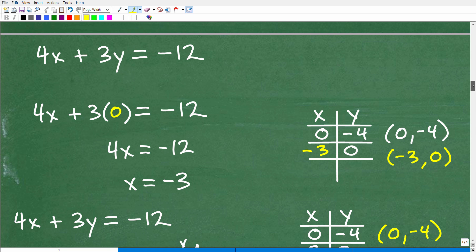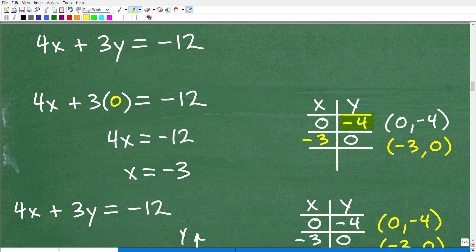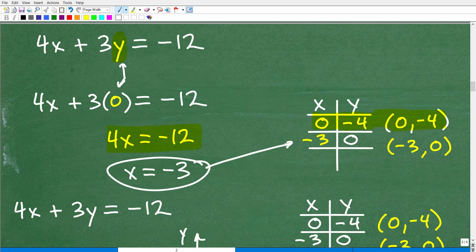So let's go ahead and figure out what X is equal to when Y is 0. We already figured out that Y is negative 4 when X is 0. So what is X when Y is 0? We're going to replace this Y with 0. So this leaves us with 4X plus 3 times 0 is 0. That leaves us with 4X equals negative 12, or X equals negative 3. So now we have two coordinates.